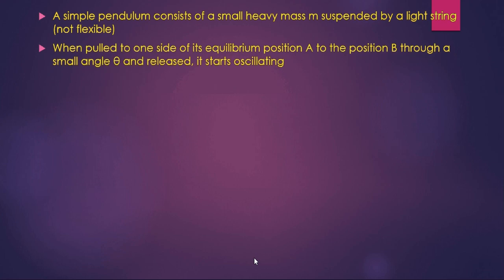When the pendulum is pulled to one side of its equilibrium position A to position B at a small angle theta and released, it starts oscillating. It is like a body where one end is fixed and the other is free. When a force is applied on the free end and displaced from mean to extreme position and then released, it will start oscillating under the action of gravity — just like a swing.